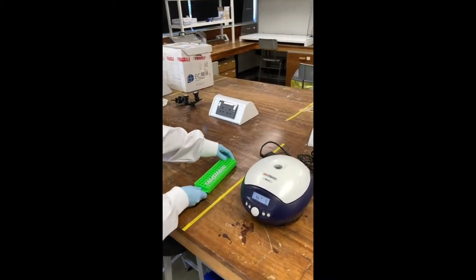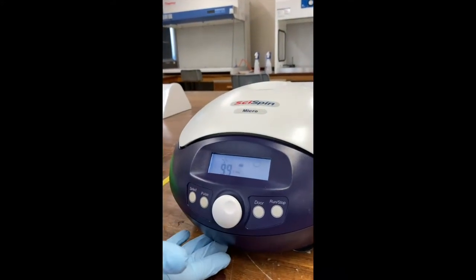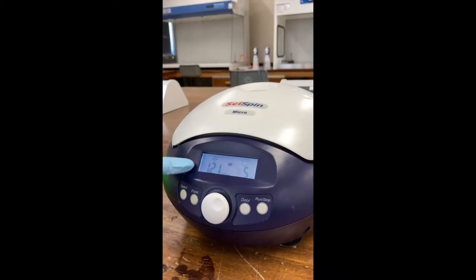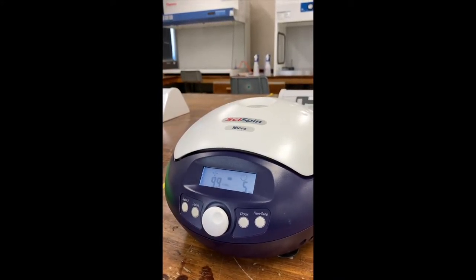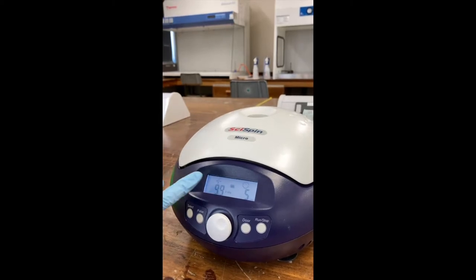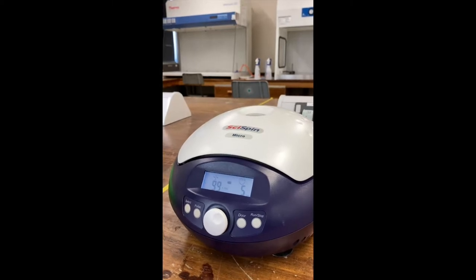And the next thing you need to do is adjust the settings on the centrifuge. So the first thing you'll do is press select and you can alter the revolutions. That will be the number of times the centrifuge will spin. This will either be in revs or in G, it's important to know which one of those you're adjusting and what setting you need.